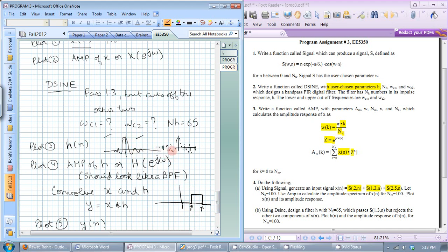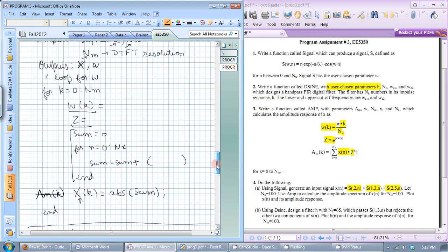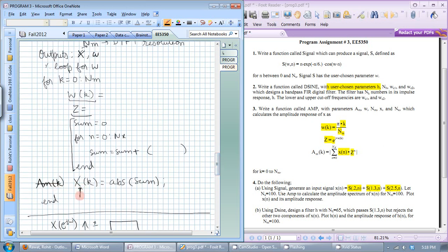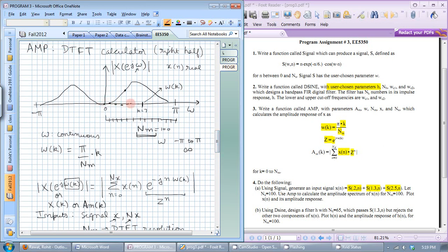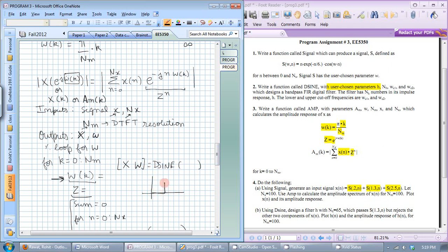Now an important thing about the plot for amp is the function must return this x and you also need to return this array omega w because you are computing the value of omega at each point for each value of k. So when you are making the plot instead of plotting 0 1 2 3 4 and 100 you should actually plot the frequency in radians so that will be 0 pi and then maybe 0.01 whatever that increment is. So make sure you return this omega also.